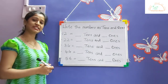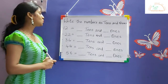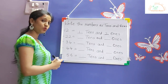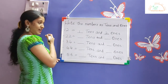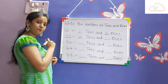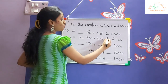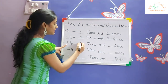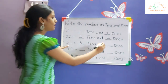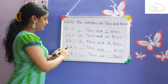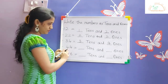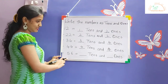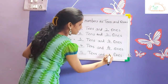Let us write these numbers in ones and tens. Number twelve: one goes in the tens place and two goes in the ones place. Number twenty-two: the left digit two goes in the tens place and the right digit two goes in the ones place. Number thirty-four: three goes in the tens place and four goes in the ones place. Number forty-four: the first four goes in the tens place and the second four goes in the ones place. Number fifty-six: five goes in the tens place and six goes in the ones place.